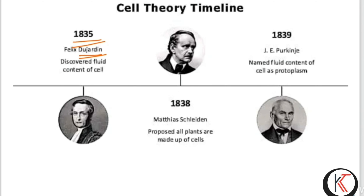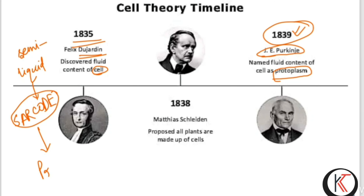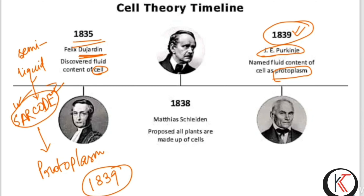Next, Felix Dujardin in 1835 discovered that the cell is composed of a semi-liquid substance, which he termed 'sarcode.' This sarcode was later renamed 'protoplasm' by J.E. Purkinje in the year 1839. So Dujardin gave the name 'sarcode' for the living particle inside the cell, and it was simply renamed 'protoplasm' by Purkinje in 1839.